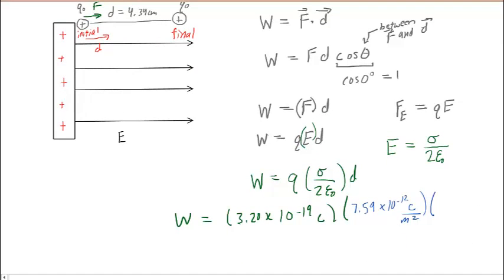Multiplied by our distance, and that was 4.34 centimeters, we'll have to convert that into meters, making it into a standard unit. So you just move the decimal place twice to the left, so you'll have 0.0434 meters.